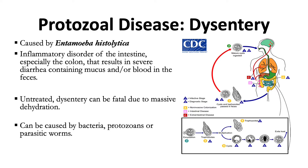We can ingest mature cysts in fecally contaminated food, water, or via hands. Then excystation occurs — the cyst wall is lost and trophozoites are released. Once released in the small intestine, they multiply by binary fission to produce trophozoites and cysts again. Both stages are passed in the feces and the cycle continues.